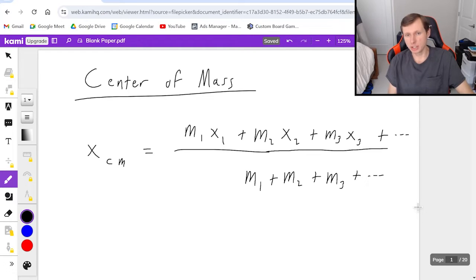So m1 plus m2 plus m3 plus dot dot dot. And if you only have two masses in your system, you don't even need the m3 or x3. And the other thing that's important for this equation is that you need to declare your zero point. Usually I declare the zero point as the leftmost point, but technically you can declare zero wherever you'd like. And we'll see that in an example.